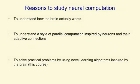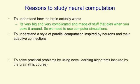There are several different reasons to study how networks of neurons can compute things. The first is to understand how the brain actually works. You might think we could do that just by experiments on the brain, but it's very big and complicated, and it dies when you poke it around, and so we need to use computer simulations to help us understand what we're discovering in empirical studies.